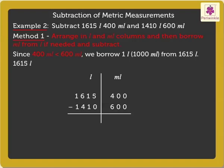Hence, 1615 litres 400 millilitres is equal to 1614 litres plus 1000 millilitres plus 400 millilitres, which equals 1614 litres 1400 millilitres.